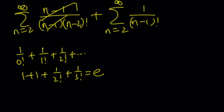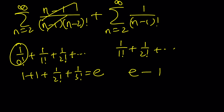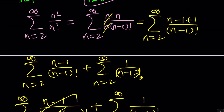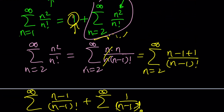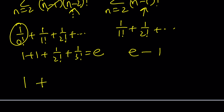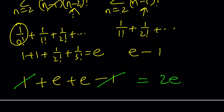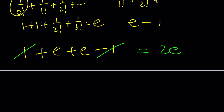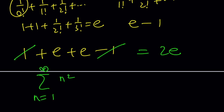The second piece, starting at n equals 2, gives 1 over 1 factorial plus 1 over 2 factorial onward — that's e minus 1, since we're missing the n equals 0 term. Combining the separate 1 we extracted at the start, plus e, plus (e minus 1): the 1s cancel and we get 2e. So the sum of n squared over n factorial from n equals 1 to infinity equals 2e.